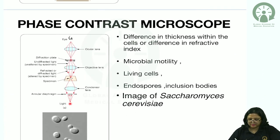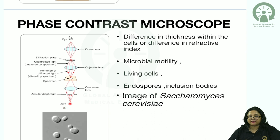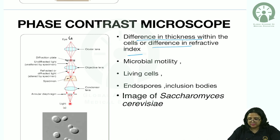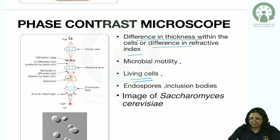Phase contrast microscope utilizes the difference in thickness or refractive index within a cell to give a 3D image. It is mostly used for living cells and can detect microbial motility, endospores, and inclusion bodies.